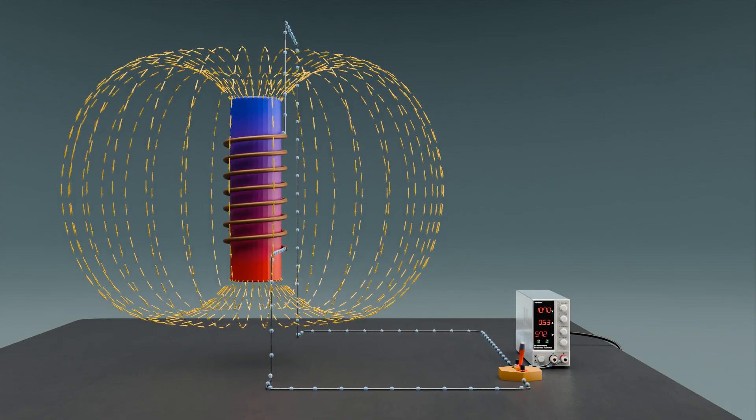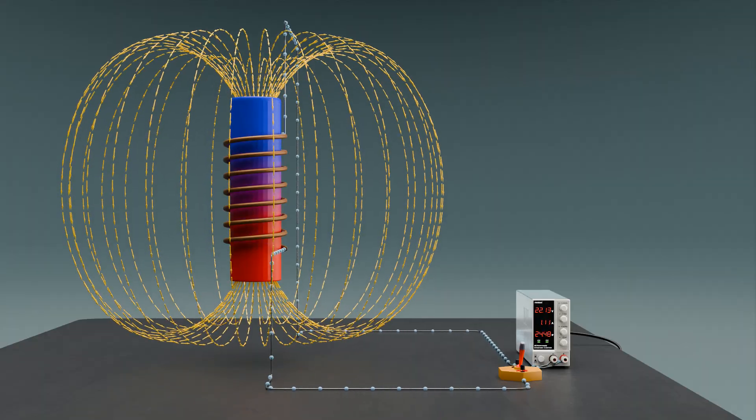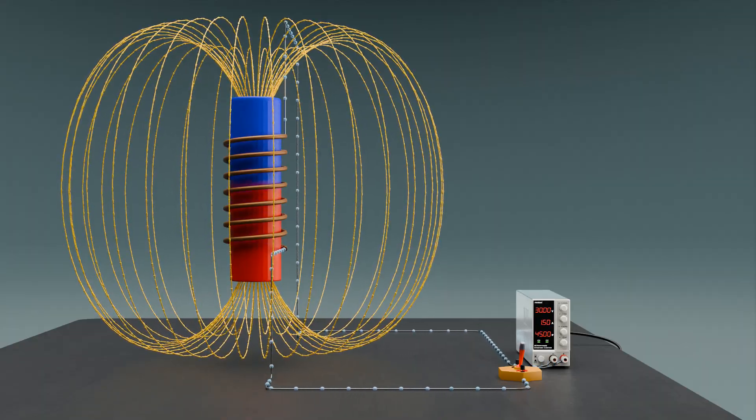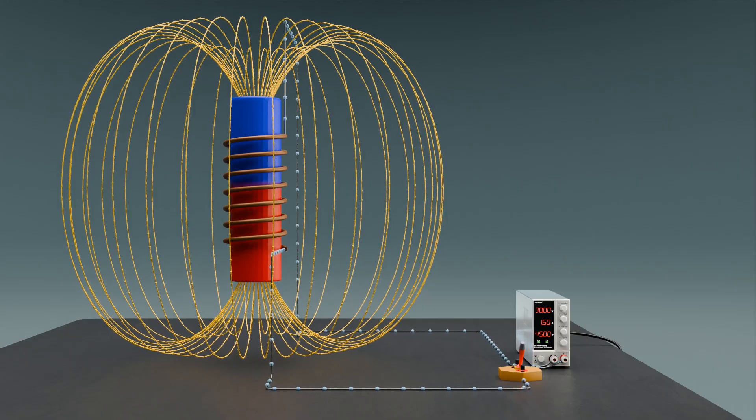Watch as we increase the DC voltage applied to the solenoid. This coil of wire, wound into a helix, is designed to produce a magnetic field when an electric current passes through it.